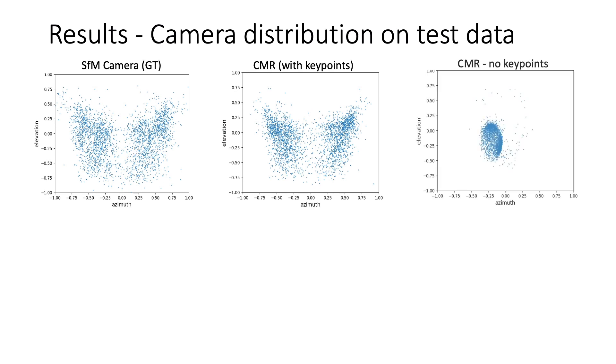When the same approach is trained without key points, camera pose prediction collapses and we get degenerate flat shapes.